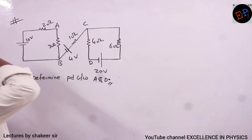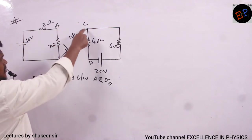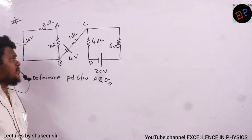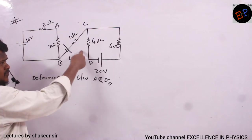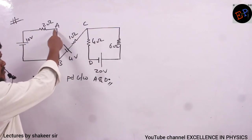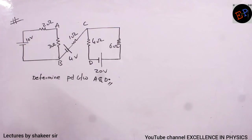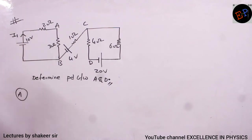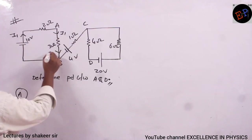Given circuit: find potential difference between point A and point D (VA − VD). To calculate this, first I need the potential difference across individual resistors. Let I1 be current produced by the 10V battery and I2 be current produced by the 20V battery. Each current flows in its own loop and does not divide, because current must return to its source battery.